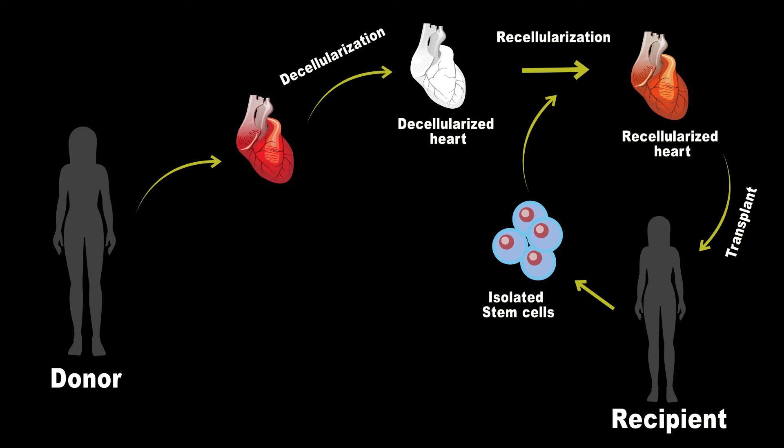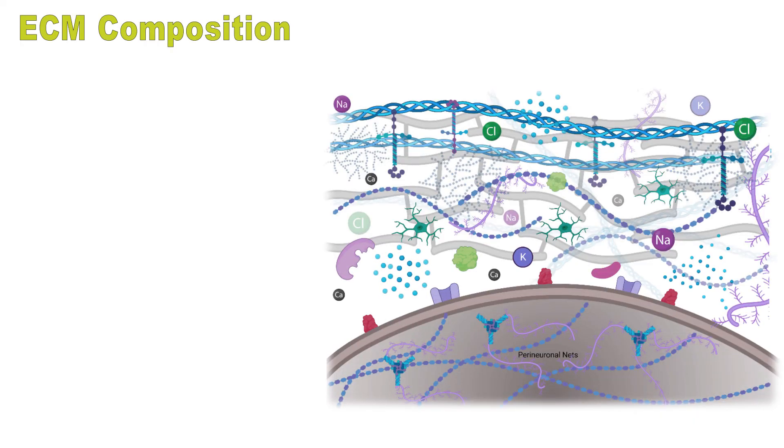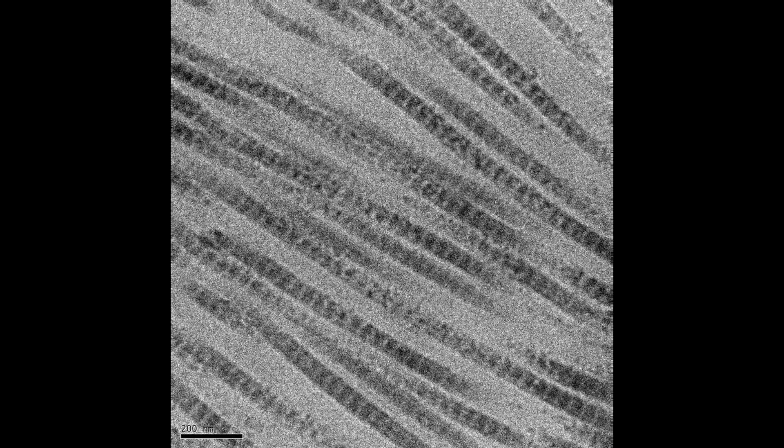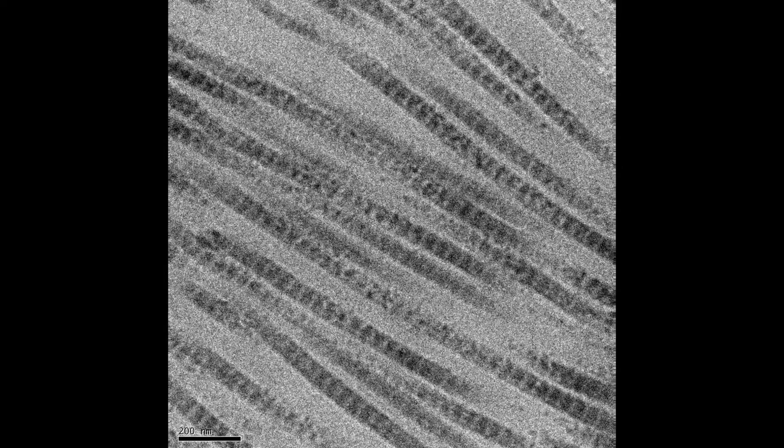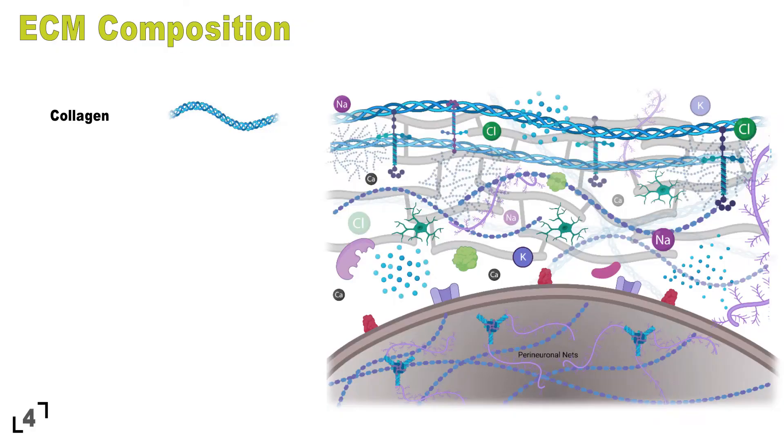But why do we use ECM for culturing stem cells? The ECM is primarily made of proteins, such as collagen, which is the most abundant protein in the ECM. There are more than 20 different types of collagen with different structures and properties.